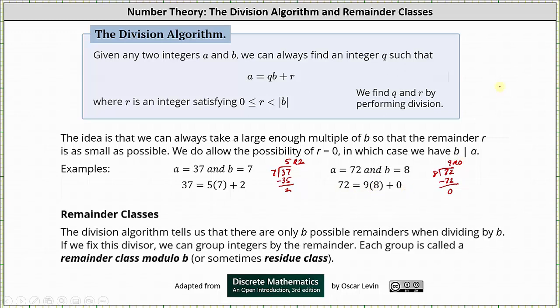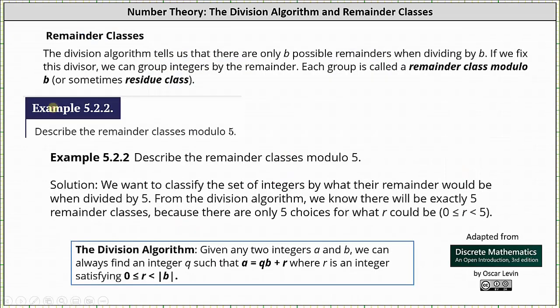Now let's talk about remainder classes. The division algorithm tells us that there are only b possible remainders when dividing by b. If we fix the divisor, we can group integers by the remainder. Each group is called a remainder class modulo b, or sometimes a residue class. As an example, we are asked to describe the remainder classes modulo five — classifying the set of integers by what their remainder would be when divided by five. From the division algorithm, we know there will be exactly five remainder classes, because r must be zero, one, two, three, or four.